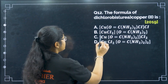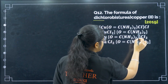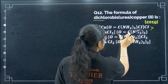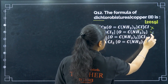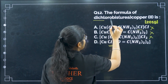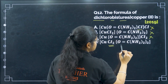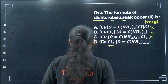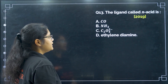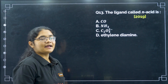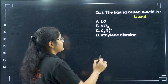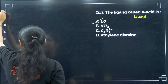Next, the formula of the dichloro compound. First I need dichloro inside, and bisurea means urea appears twice. Checking the options: here dichloro is outside, here dichloro is there with bisurea — so option D. Next, the ligand called a pi acid: ligands that can form pi bonds are called pi acid ligands — option A.